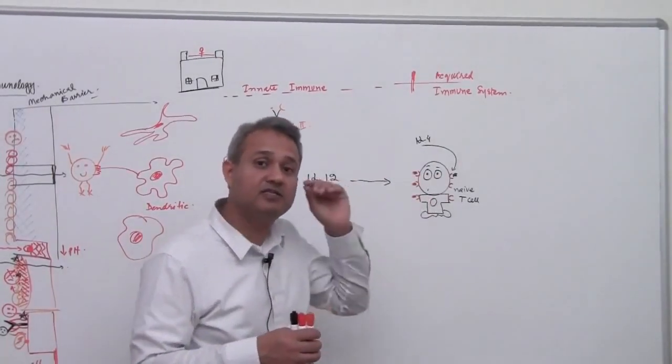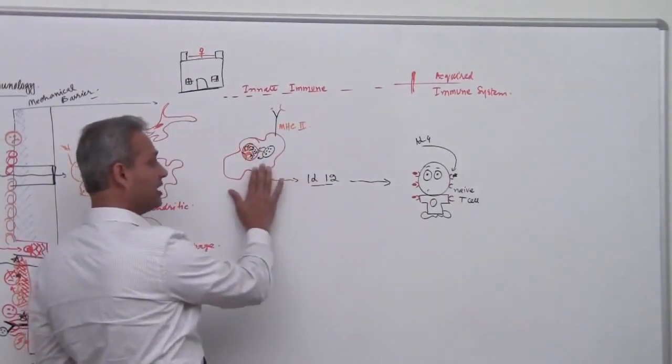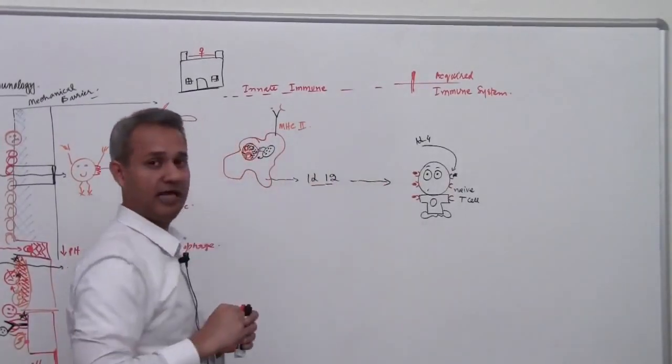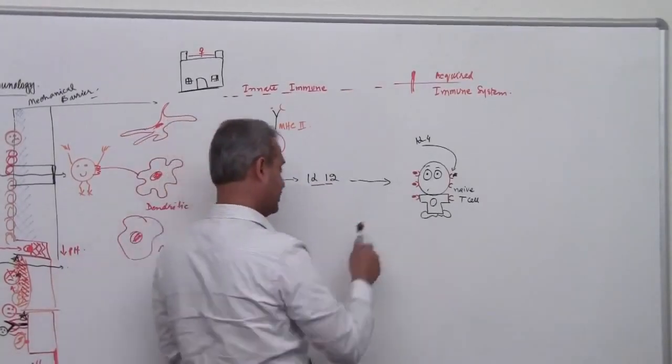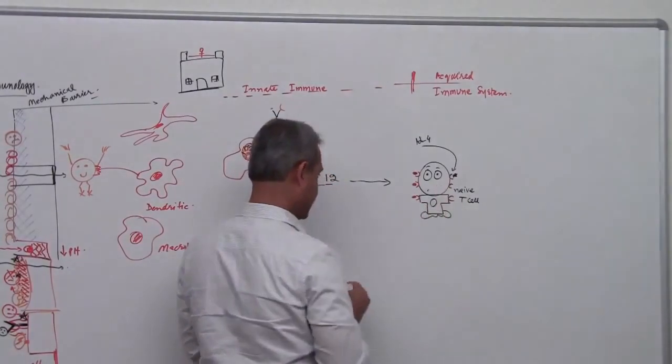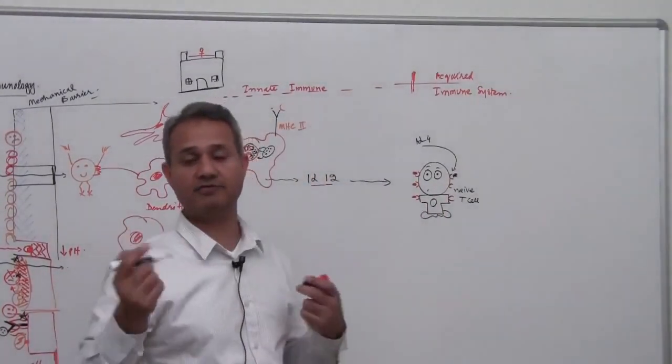When he listens to IL-12, IL-12 is a chemical substance coming from the macrophage via the blood and reaches the helper cell. When he listens to IL-12 immediately, this naive T cell finds his objective in the life.